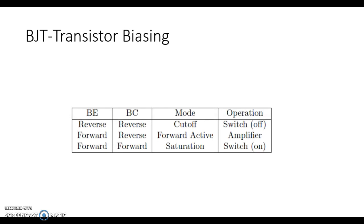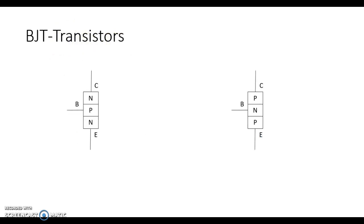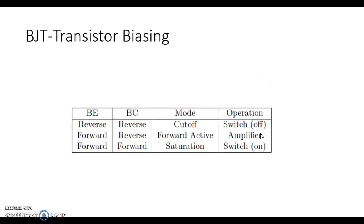Before we get to the actual understanding of it, we need to understand the following. When we have BJT transistors and we're biasing them — meaning setting them up to work in a specific fashion — we need to know the three different leads coming from a BJT transistor: you have a base, a collector, and an emitter, on both the NPN and the PNP.